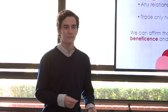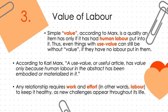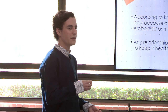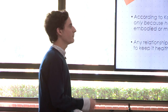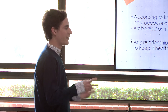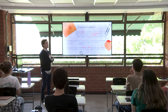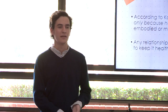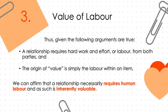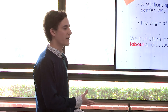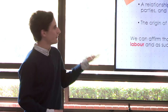Second, the value of labor. Marx says that human labor is the basis of all types of value — so even things with use value that didn't have labor put into them can still not have value. Relationships, as everyone should know, require work and effort: when people have disagreements or any issue that needs to be resolved, there needs to be work — and therefore labor. Given that a relationship requires hard work, and given that the origin of value is that labor, we can see that a relationship is also inherently valuable from a Marxist point of view.